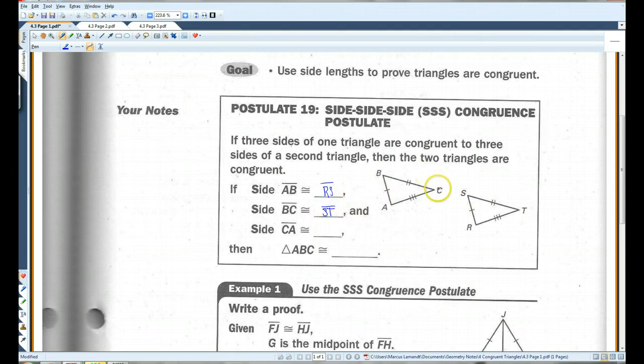And side CA is congruent to side TR. Then, triangle ABC is congruent to triangle RST.